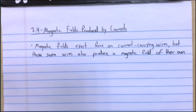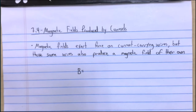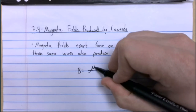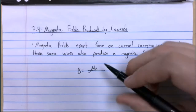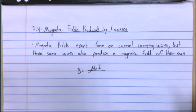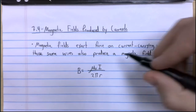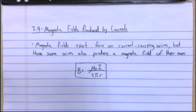This core concept goes along with an equation that tells us the magnitude of that magnetic field. The magnetic field B produced by a current-carrying wire is given by: B equals mu naught times I divided by 2 pi r.